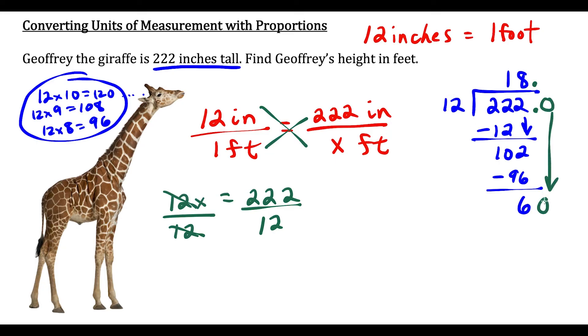Notice 12 goes into 60 evenly 5 times, and 5 times 12 is 60. So when we subtract we have a remainder of 0.